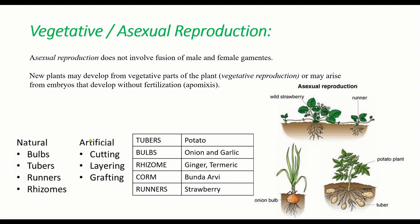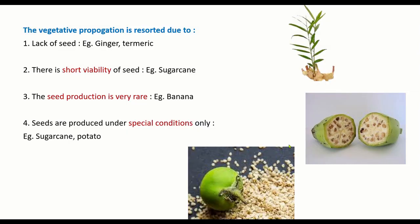In artificial methods, when we maintain lines produced by clonal selection, we can do this by cuttings, layering, or grafting, which gives us uniform clones. Examples of crops where tubers act as propagating material are potato; bulbs — onion and garlic; rhizomes — ginger and turmeric; corms — banana or taro; and runners — strawberries.